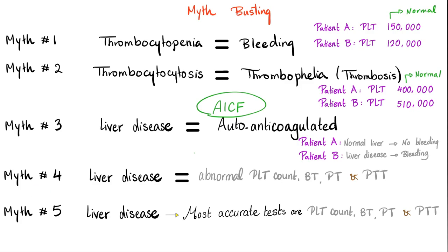Myth number four: because the patient has liver disease, the platelet count, bleeding time, PT, and PTT will all be abnormal. Nonsense — these are old archaic tests, not ideal for liver disease. You need more sophisticated tests. A patient with liver disease could have abnormal or normal results on those tests. Myth number five: the most accurate tests for liver disease are platelet count and bleeding time. Stop it — myths like these can kill the patient.